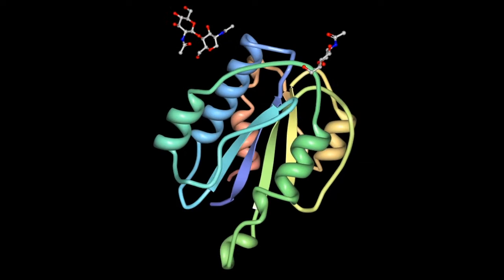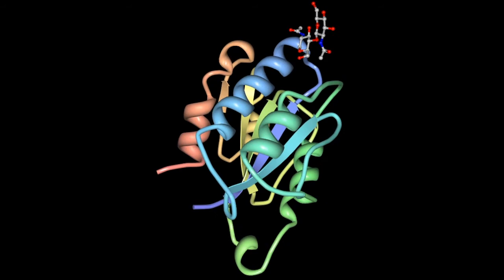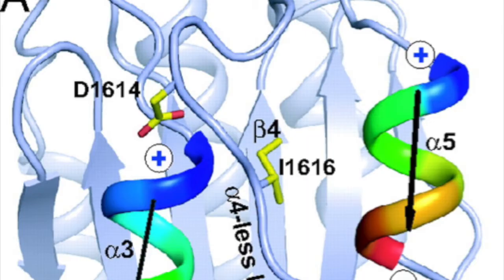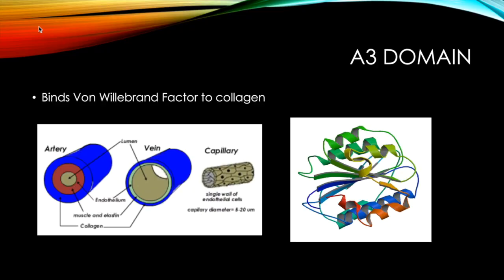It is composed of a central beta sheet and six alpha helices. But what is different about the A2 domain from other A domains is that in place of the fourth alpha helix is a long loop that runs from the C-terminus of the beta-4 strand to the N-terminus of the beta-5 strand, as shown in green. The ADAMTS13 cleavage site, which is composed of a tyrosine and a methionine shown here, is actually buried by this alpha-4 helix loop deep in its hydrophobic core.